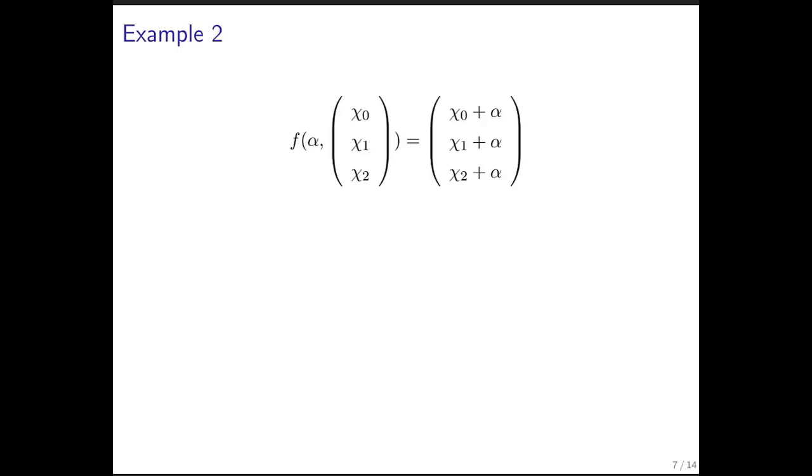Let's do another example. Here we have a function of a scalar and a vector of size 3. The output is that vector except that each of its components has been changed by adding the scalar to it.